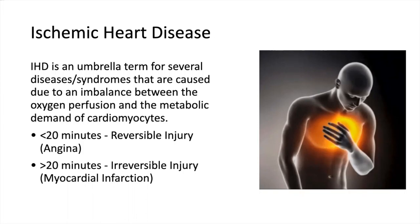Ischemic heart disease is probably the most common and fatal consequence of atherosclerosis. It is an umbrella term for several diseases caused by an imbalance between oxygen perfusion and the metabolic demand of cardiomyocytes. Cardiomyocytes primarily use oxidative phosphorylation and are highly dependent on O2 supply. If this supply is disrupted for less than 20 minutes it causes reversible injury called angina, and if disrupted for more than 20 minutes it causes irreversible injury called myocardial infarction.